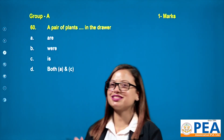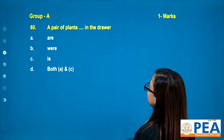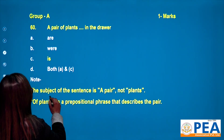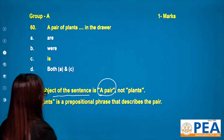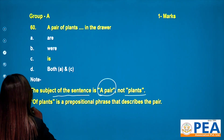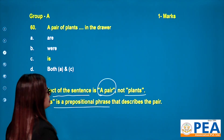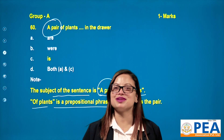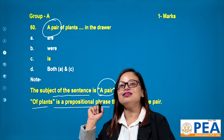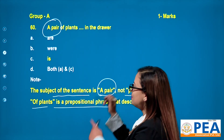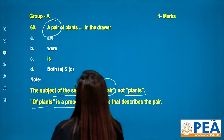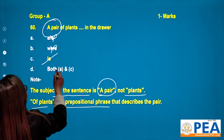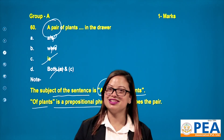Question number 60: 'A pair of plants ___ in the drawer.' Options are: are, where, is, both A and C. The subject of the sentence is 'pair', not 'plants' — 'of plants' is a prepositional phrase describing the pair. 'A pair' means one pair, so the subject is singular. The correct answer is 'is'. 'Are' and 'where' are plural, and option D is also wrong.